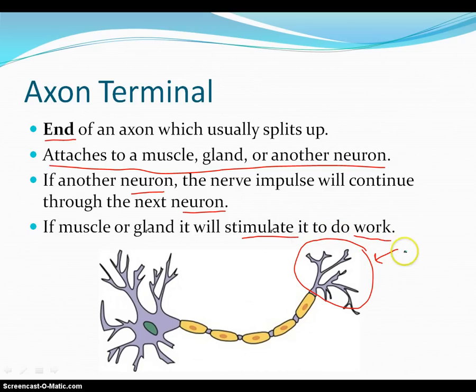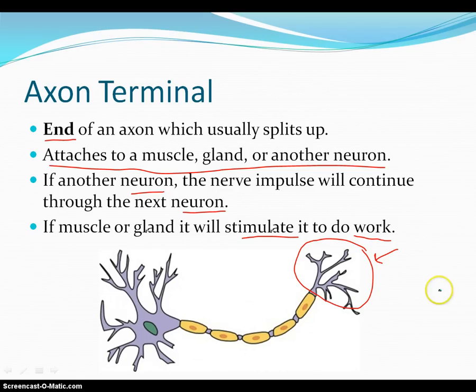What does that mean? Well, think about just snapping — making a snapping sound. You are using your muscles to snap. That happens because you are sending a nerve impulse, and those axon terminals at the end of the axon are attached to part of your muscles, and it causes those to contract and allows you to snap.